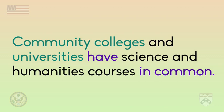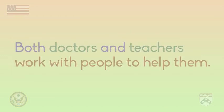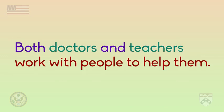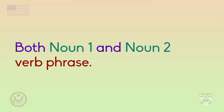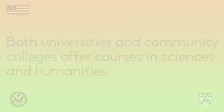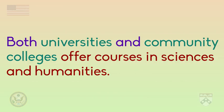Phrase number three: 'both...and.' Both doctors and teachers work with people to help them. This sentence begins with the word 'both,' in purple, followed by the two nouns in green, and the verb phrase for more explanation. The verb phrase is very important because it explains how the two things are similar. Here is another example using the phrase 'both...and': 'Both universities and community colleges offer courses in sciences and humanities.'